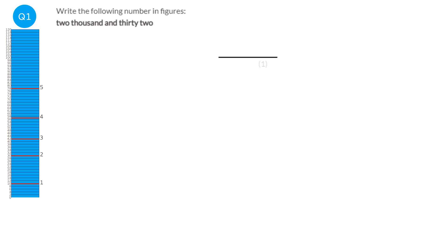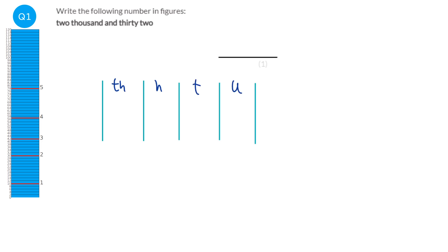We can draw out our place value grid to help us out with this question. We've got thousands, hundreds, tens and units. So thousands go here, hundreds here, tens here and then units here. This says two thousand, so a two will go in the thousands column. Thirty, so that'll be a three there, and two. We need to fill in a zero here to keep that two as two thousand, otherwise it would collapse and become two hundred and thirty-two. So the answer is two zero three two.